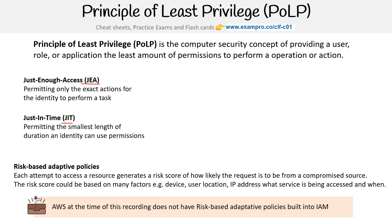As of now, AWS does not have risk-based adaptive policies built into IAM — you can roll your own. Interestingly, Cognito does have risk-based adaptive policies, called adaptive authentication, but that's only for user pools, not identity pools. User pools are for getting access to an app you've built through an IdP, whereas identity pools in Cognito are about getting access to AWS resources.